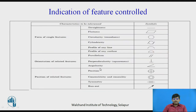These are indications of feature controlled systems. The first category is form of a single feature: cylindricity, flatness, straightness, and so on — these are the conventions and symbols. Then you have orientation of a related feature: how the feature is oriented — parallel, perpendicular, angular. Then there is positioning: position of a related feature — concentricity, symmetry, and run-out. These are some of the symbols used for geometrical tolerances.